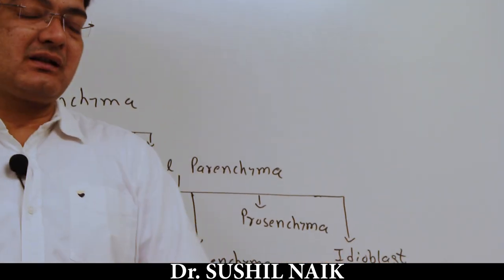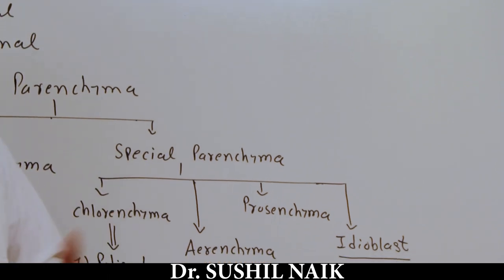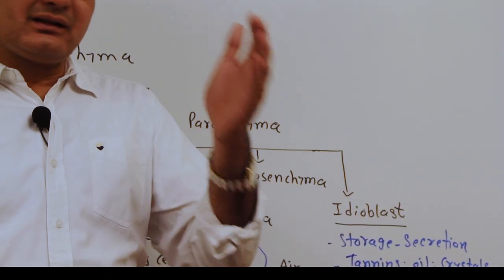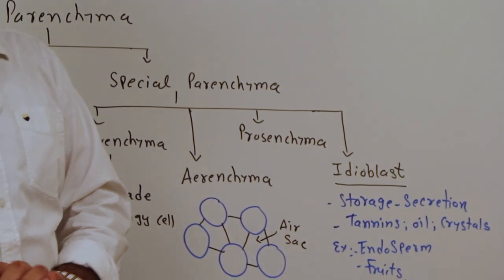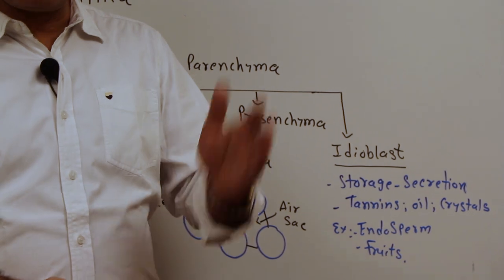Idioblast is mainly concerned with storage and secretion. Tannin, oil, crystals, and other substances are stored in this kind of parenchyma tissue which is found in the endosperm as well as in some fruits.